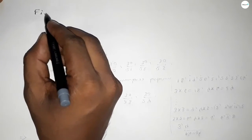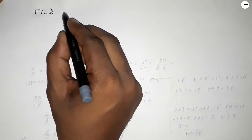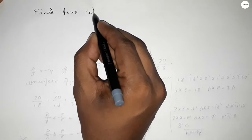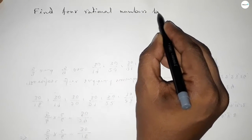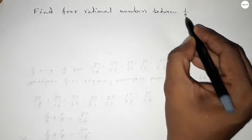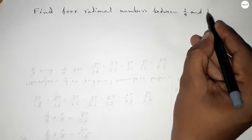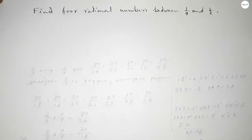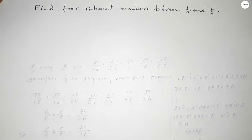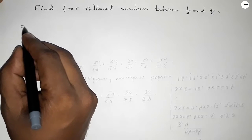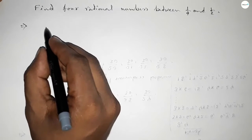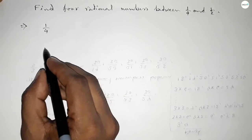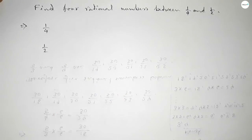Hi everyone, welcome to Sh Chair Classes. Today in this video we have to find four rational numbers between one over four and one over two. So let's start the video. First of all, write down here the given numbers: one over four and one over two.